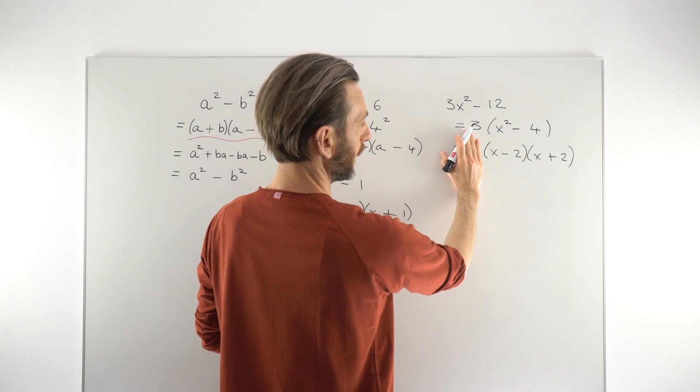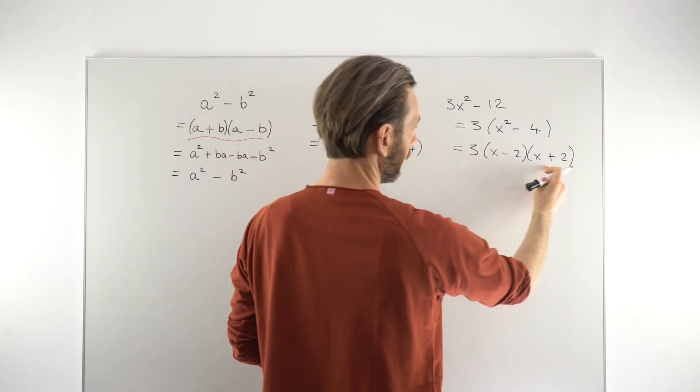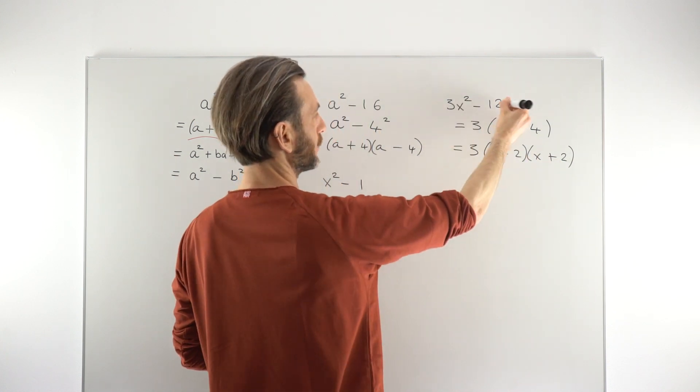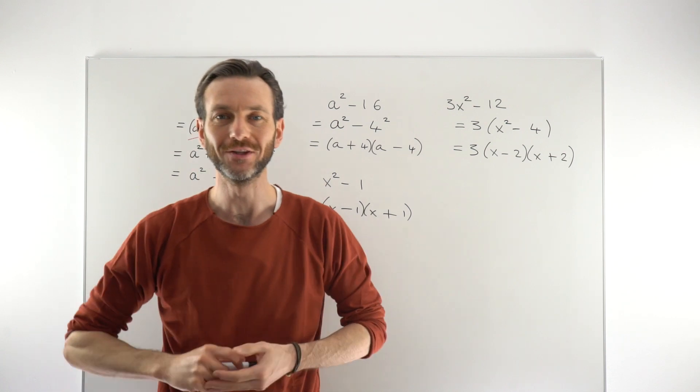Common mistake here is to then drop the 3 on the second line, but you need to keep the 3 because if you multiply that out, that should take you back to that first line of working. So that's how you factorize a difference of squares.